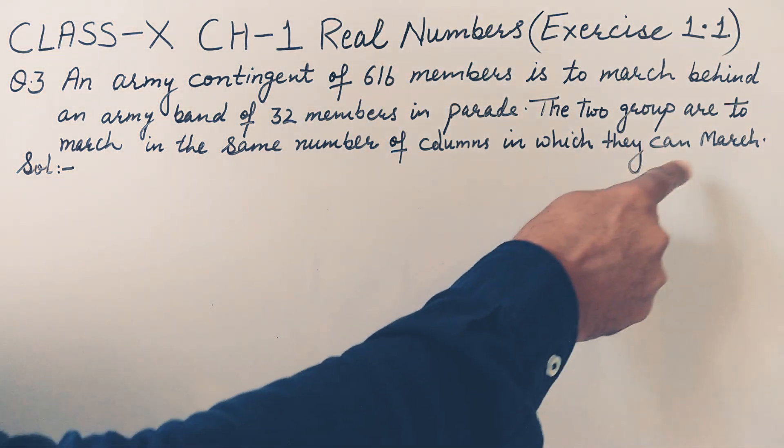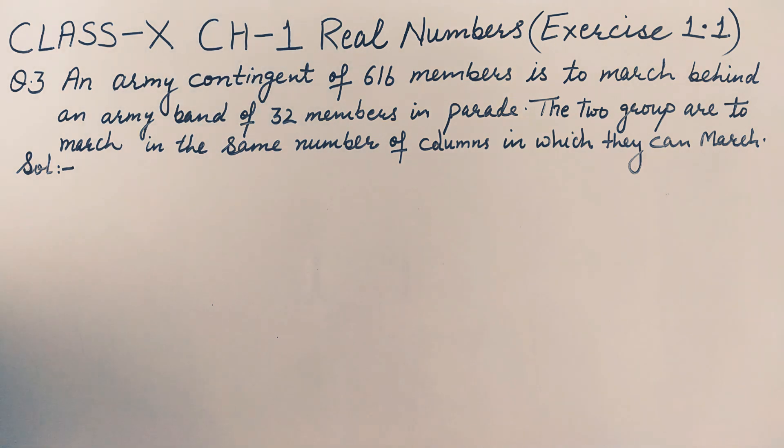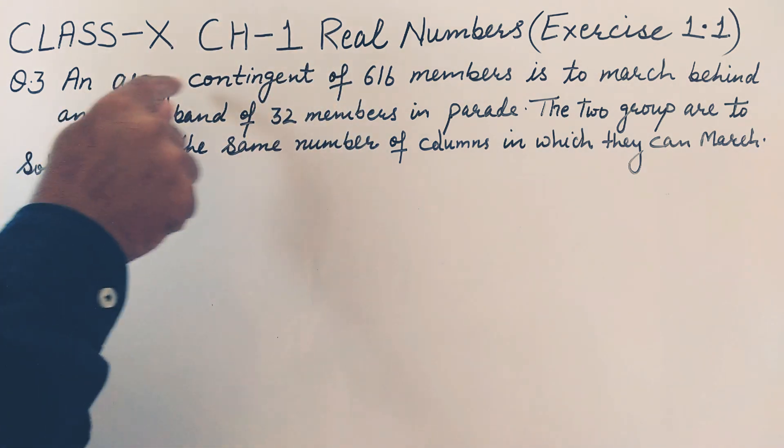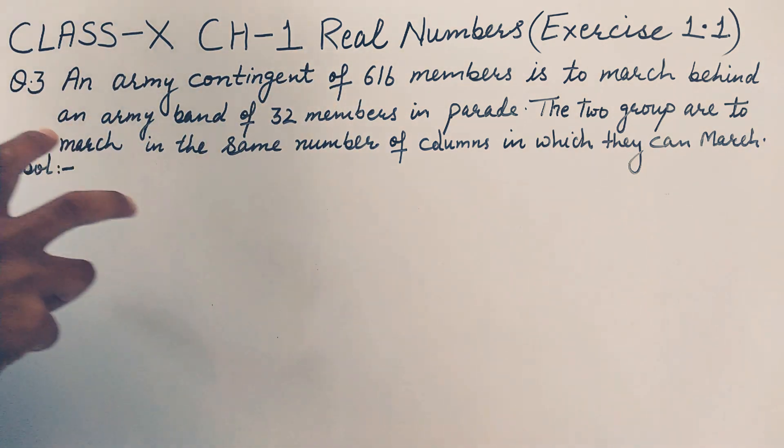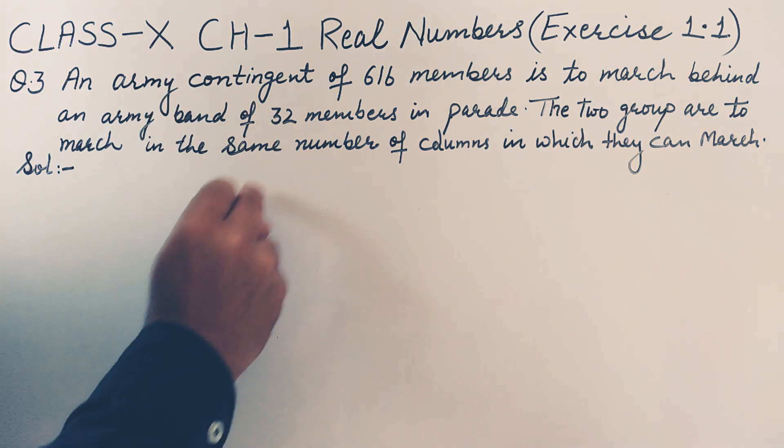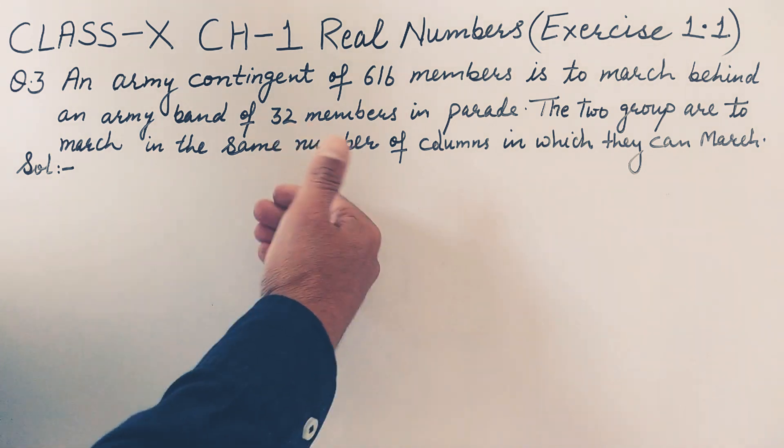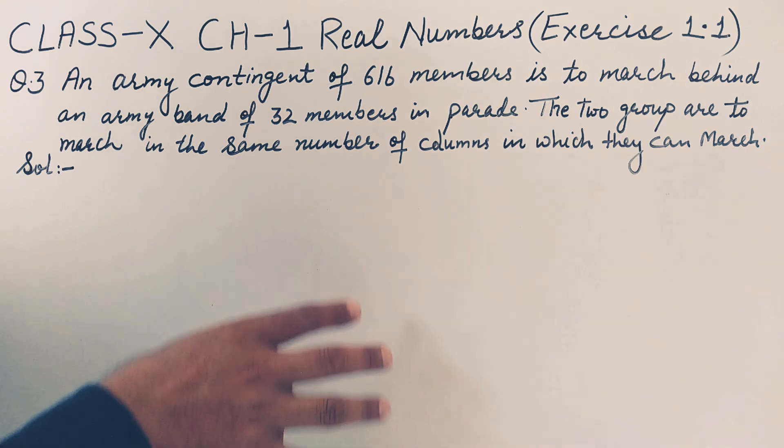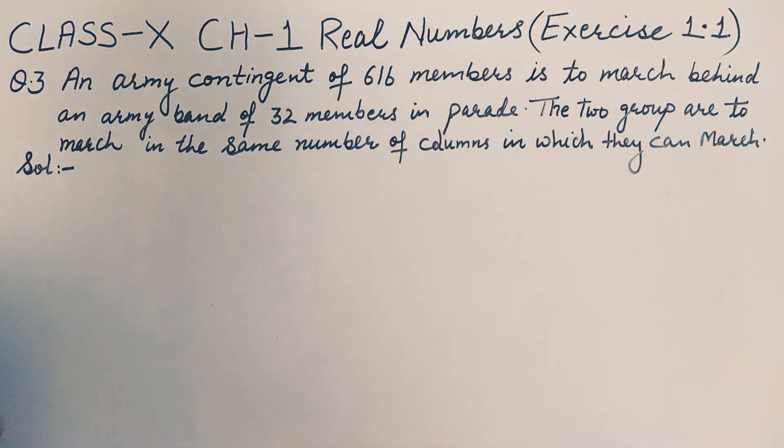In this question it is said that there are 32 members of band and 616 members of army contingent. These are to march in such a way that 32 members are to stand in front and behind that 616 members are to march, in such a way that both should be going in the same number of columns.